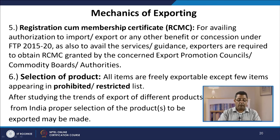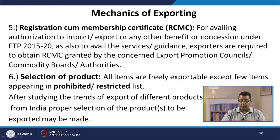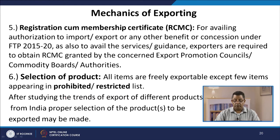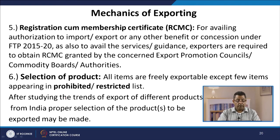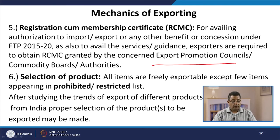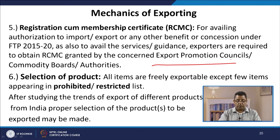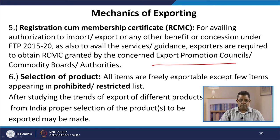The next step is to obtain a Registration-cum-Membership Certificate (RCMC) for availing authorization to import and export, benefits under the Foreign Trade Policy 2015–2020, and guidance from export promotion councils. Exporters must obtain this certificate from the concerned export promotion councils or commodity board. After the procedural steps, the more important business step is selection of product. All items are freely exportable except those on the prohibited or restricted list. After studying export trends of different products from India, proper selection of product to be exported can be made.